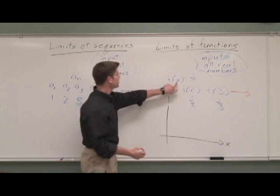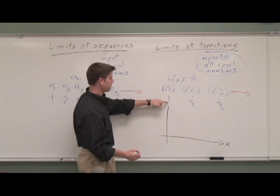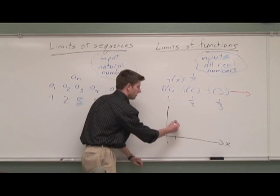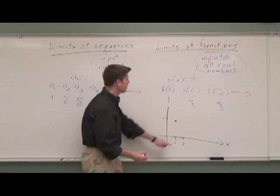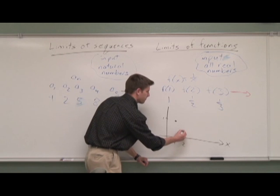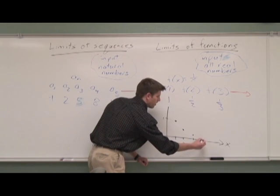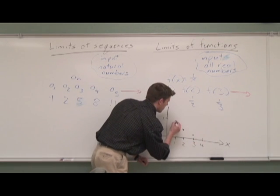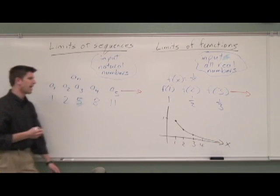And the graph would look like this. We put our inputs here. So for these table values, if my input is 1, my output is 1. Input 2, my output will be 1/2. Input 3, my output will be 1/3. And then 1/4. And so on. And you could sort of draw a line like that.